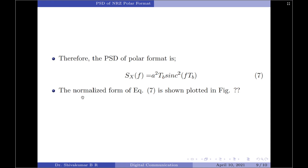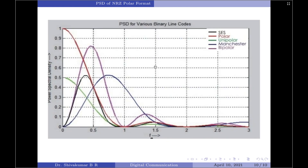We will now see the normalized form of this equation in the diagram. This diagram contains the normalized power spectral densities of polar, unipolar, Manchester, and bipolar formats. Currently we are only discussing polar, which is highlighted by the red colored curve representing the normalized PSD of the NRZ polar format.